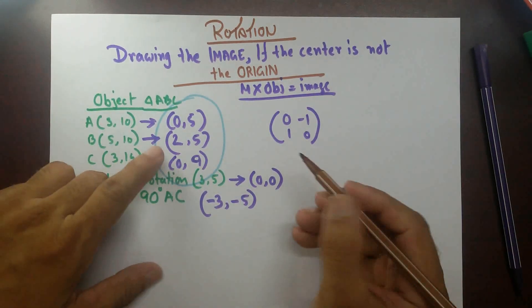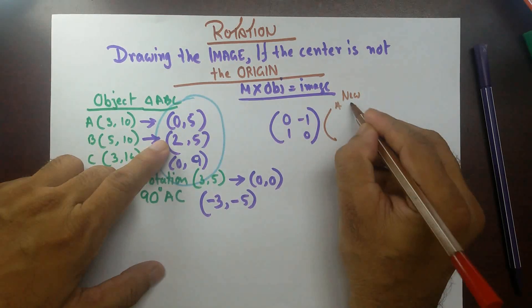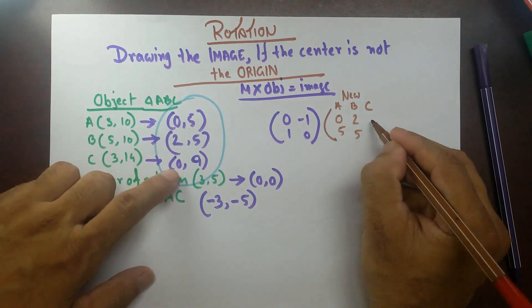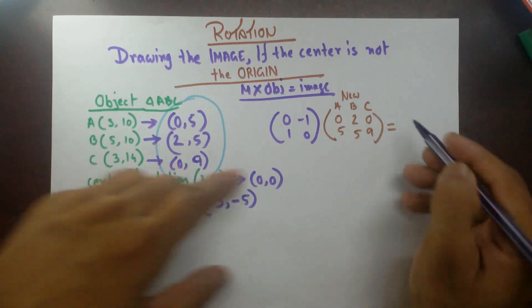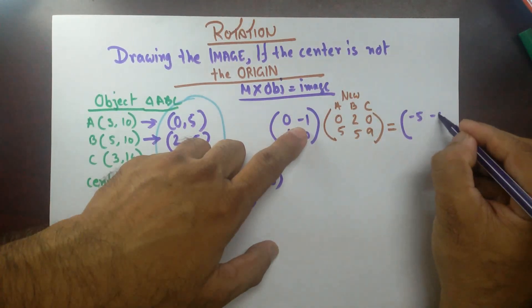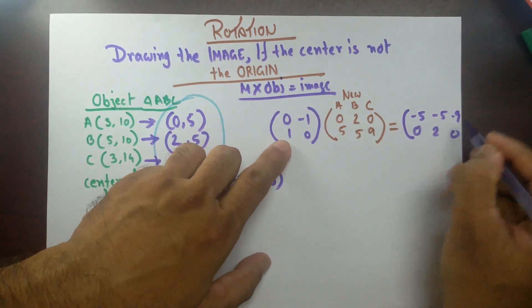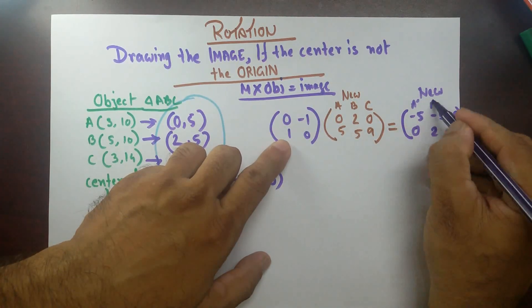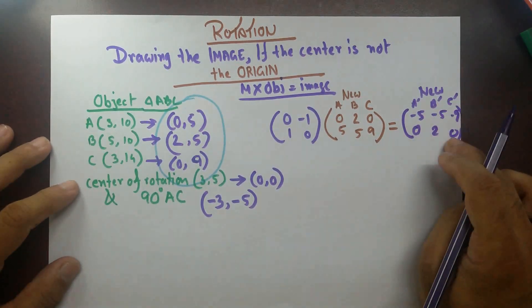Now, if I multiply this, this is again my new A, B and C: 0,5, 2,5 and 0,9. Then, when we multiply that, we are going to get 0, then it's minus 5, then minus 5, minus 9 and then it's going to be 0, 2, 0 and that's my new A prime, B prime, C prime. Minus 5,0, minus 5, 2, minus 9, 0.